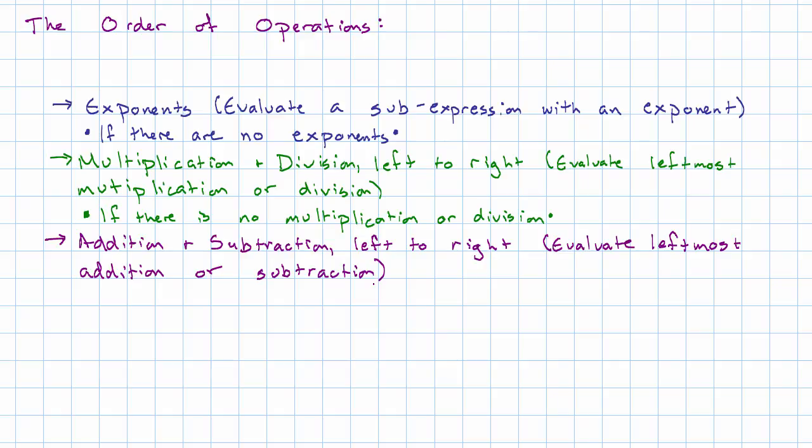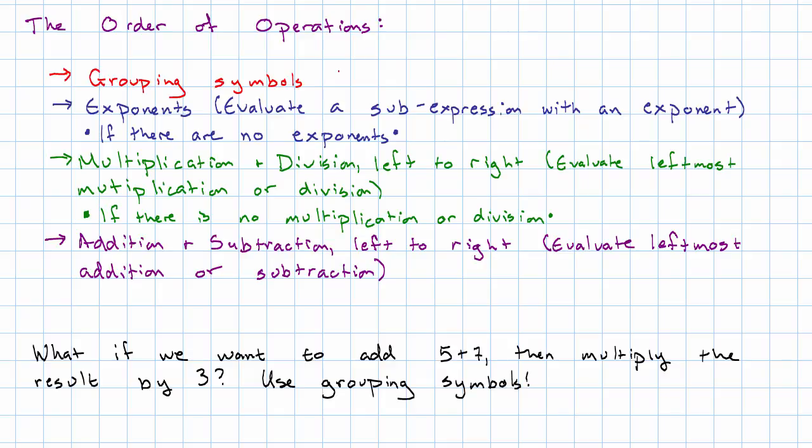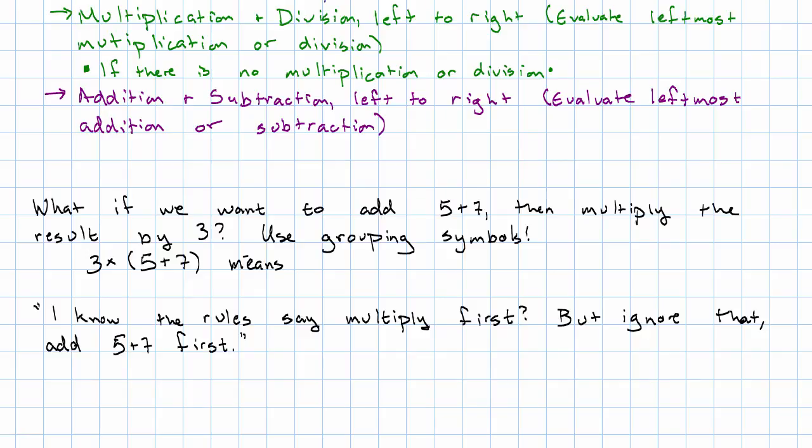So here's the question. What if that's not what we want? What if we want to add 5 plus 7, and then multiply the result of that by 3? Well, we use grouping symbols. The very first thing we look for is what are called grouping symbols. The most common example is parentheses. Sometimes we'll use different shaped brackets to make it easier to tell them apart. What a grouping symbol does is, it says, don't follow the usual order, do this first instead. So we would write 3 times (5 plus 7). Those parentheses mean, I know the rules say multiply first, but ignore that. You really want to add 5 plus 7 first in this problem.